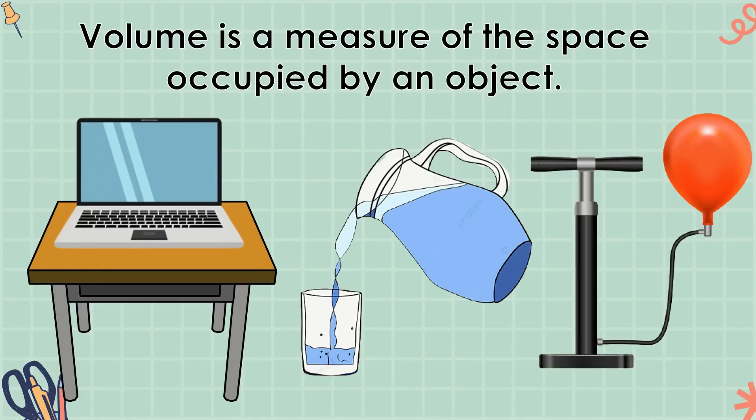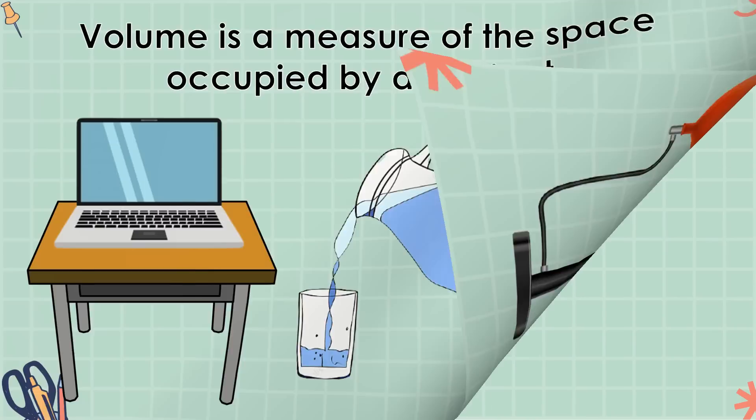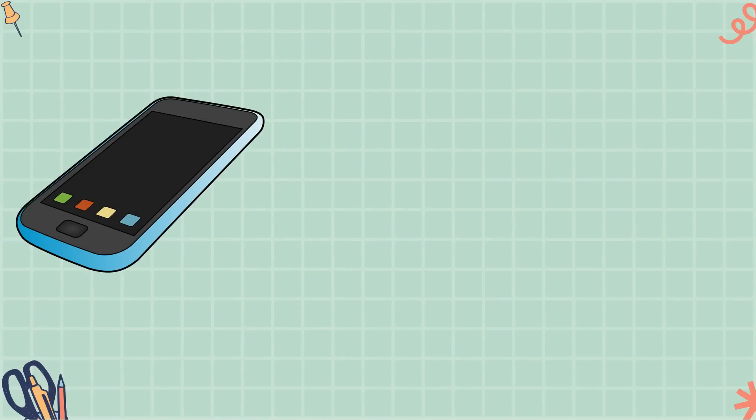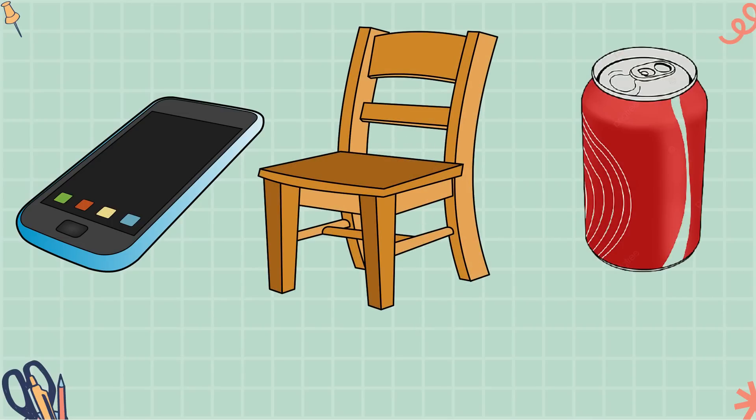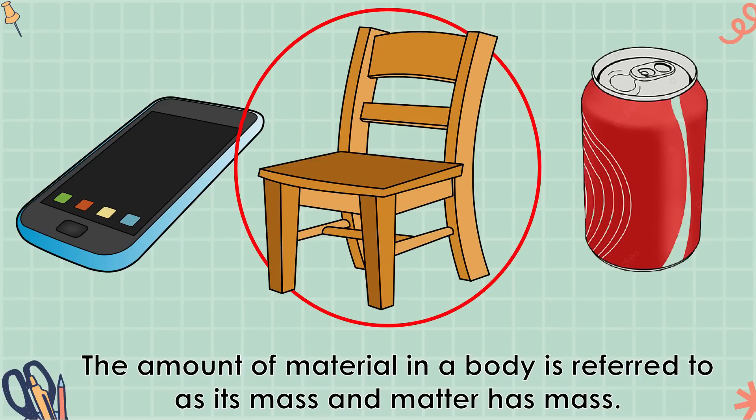Volume is a measure of the space occupied by an object. Ngayon, subukan mo naman buhatin ang iyong cellphone. Sumunod naman ang upuan, at panghuli naman ay ang can of soda. Alin sa kanila ang pinakamabigat? If your answer is chair, then you are correct. Pinakamabigat ang upuan kumpara sa cellphone at sa can of soda. Pero bakit? Ito ay dahil mas greater ang kanyang mass. Laging tatandaan, the amount of material in a body is referred to as its mass, and matter has mass.